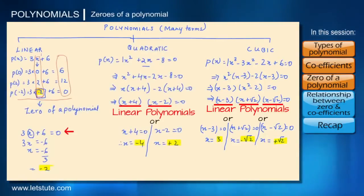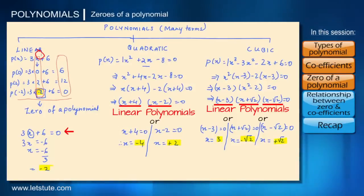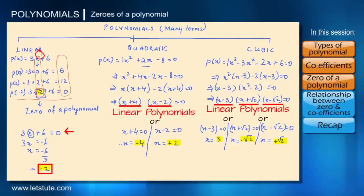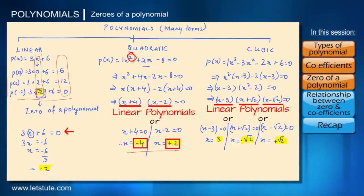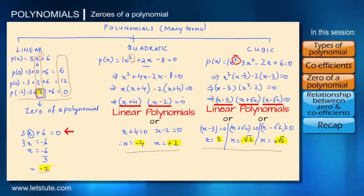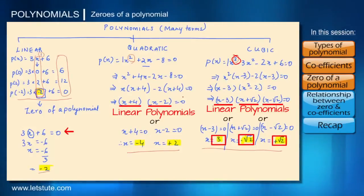By looking at this, we can say: when we have a linear polynomial of degree 1, we can have one zero. When we have degree 2 for a quadratic polynomial, we can have up to two zeros. And when the degree is 3, we can have up to three zeros of a polynomial.